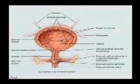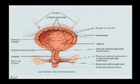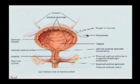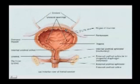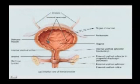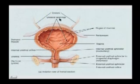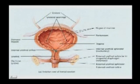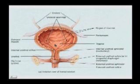Here we see the adult urinary bladder in an anterior coronal section, looking at the posterior wall. The parietal peritoneum drapes over the top — this structure is primarily retroperitoneal and never had a mesentery. The left and right ureters pass posterior and inferior to the urinary bladder, opening into the posterior inferior walls at the ureteral orifices. These two openings and the internal urethral orifice form the three corners of the triangular elevation called the trigone.